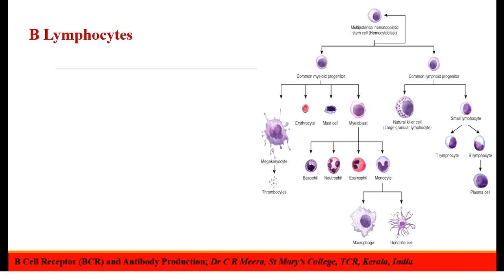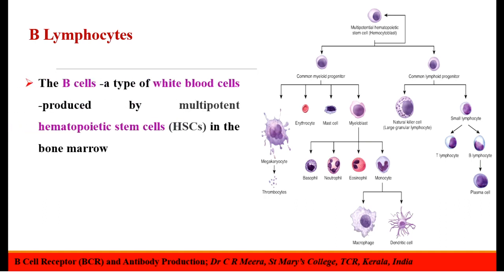The production of antibodies is the function of B-lymphocytes. B-cells are a type of white blood cells produced by multipotent hematopoietic stem cells in the bone marrow. Here in the diagram, we can see that the hematopoietic stem cells differentiate into myeloid progenitor cells and lymphoid progenitor cells. From this lymphoid progenitor cell, the B-lymphocytes as well as the T-lymphocytes are produced. These B-lymphocytes are actually producing the antibodies.